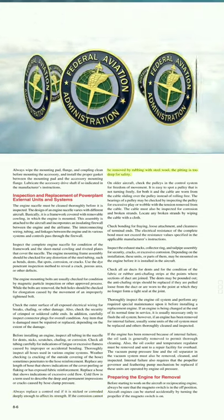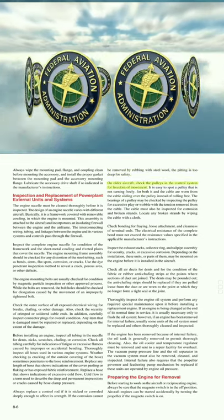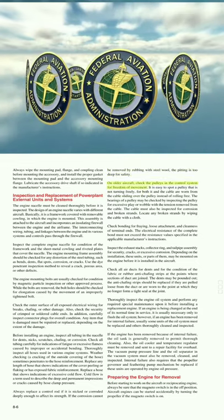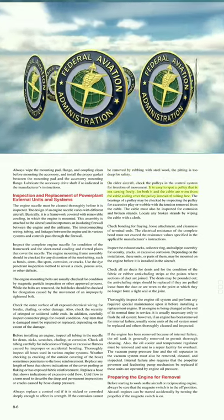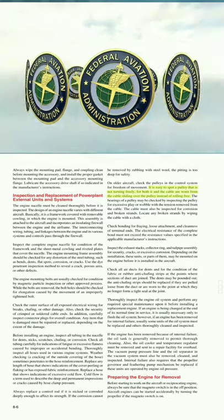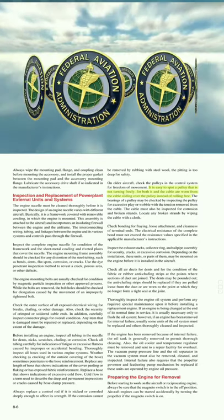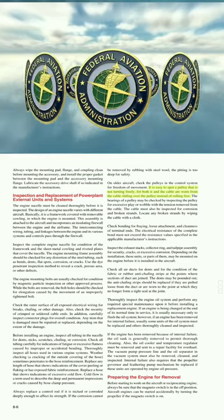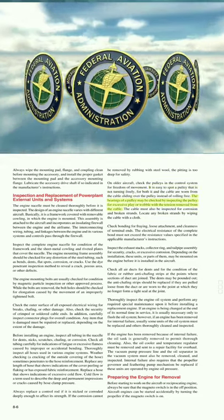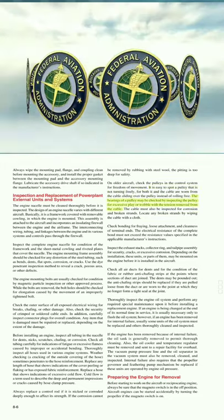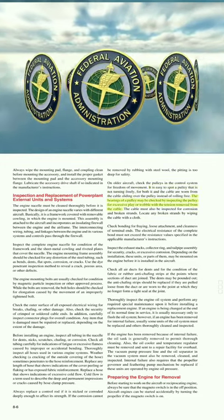On older aircraft, check the pulleys in the control system for freedom of movement. It is easy to spot a pulley that is not turning freely because both it and the cable are worn from the cable sliding over the pulley instead of rolling free. The bearings of a pulley may be checked by inspecting the pulley for excessive play or wobble with the tension removed from the cable.